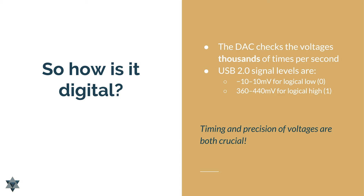As you can see, if the DAC is checking thousands of times per second and the variation of voltage is so small, then the timing and precision of those voltages are crucial. If the DAC checks the voltage at a moment that is not quite right, it could very easily see a voltage that's not what was intended by the source. When we bring into the picture the sorts of interference that can also happen, you start to see why precision is so important — any noise introduced could cause errors in the signal being read by the DAC.